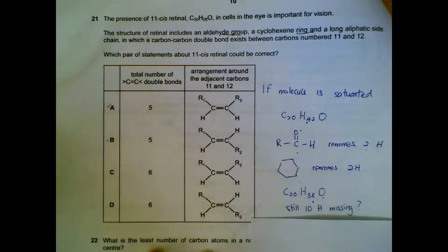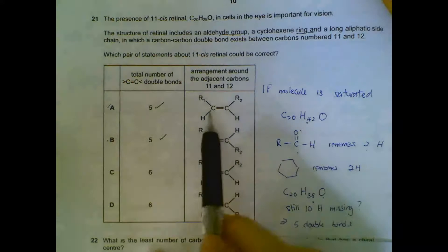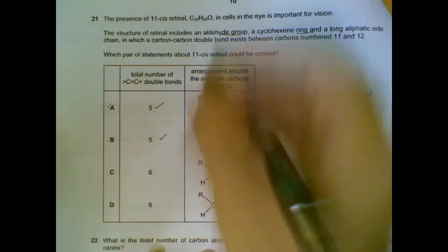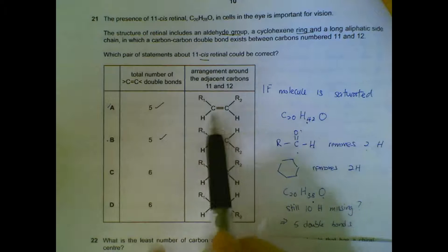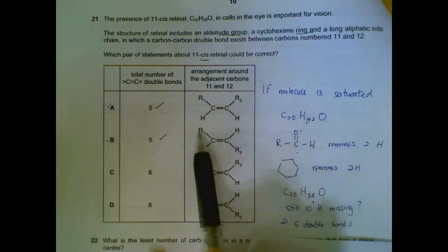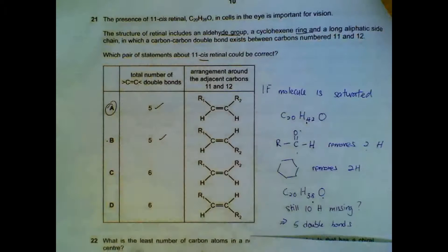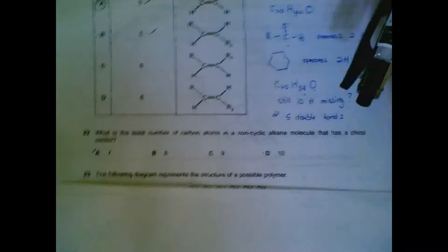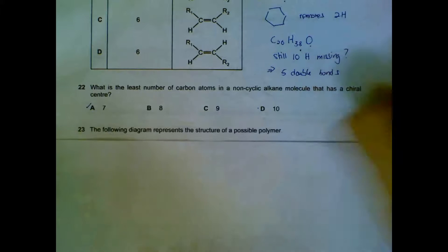So it is between A and B. And then which structure should it be? They give us a clue that it is a cis molecule. A is a cis molecule. B is a trans molecule - the big groups are on opposite sides. So we want a cis molecule. It is A.